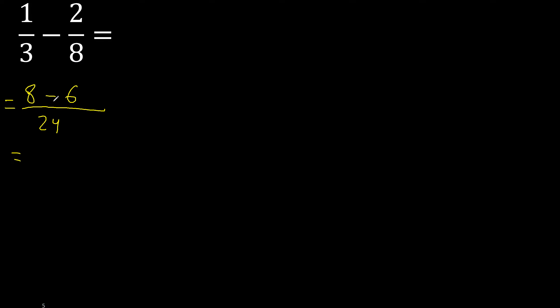2 can be simplified because it can be divided by the same number. Divided by 2: 2 divided by 2 is 1, 24 divided by 2 is 12.